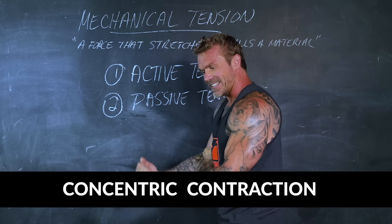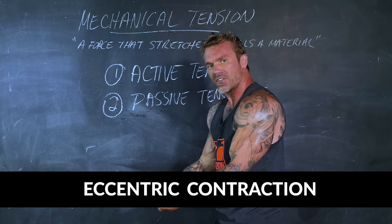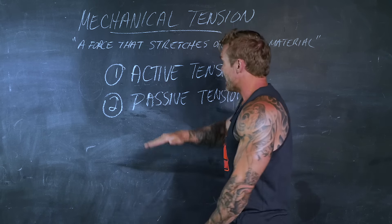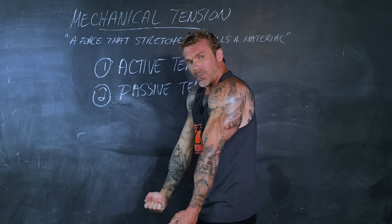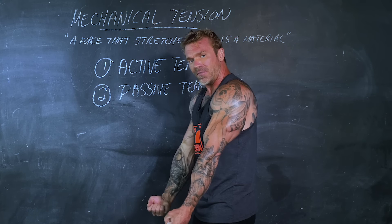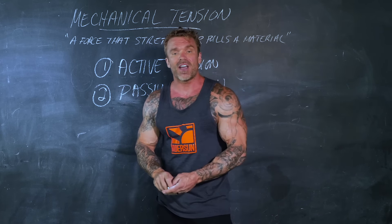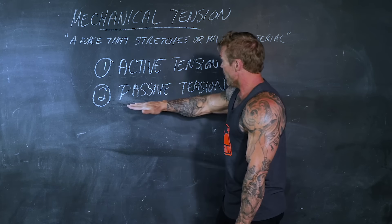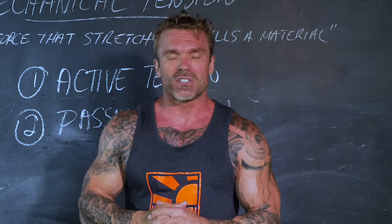Active tension occurs during a concentric contraction, an isometric hold, or an eccentric contraction — when our muscle has mechanical tension opposing it during an active contraction. Passive tension is when our muscle is in a relaxed position and not contracting, but that force is still pulling against it. They've actually found muscle-building benefits of passive tension, not just active tension.